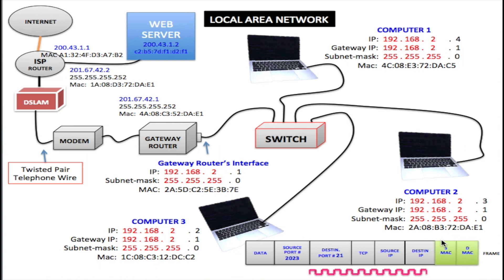So right now we have a packet because we removed the source and destination MAC addresses. We just changed the IP address from the private to the public as the source IP, while the destination IP remains the same. At this point the packet will go to the gateway. At the gateway we will add the source MAC address and the destination MAC address, and then the frame would be sent. One thing I want you to notice is that this is a network as well — we have 201.67.42.1 and .2, and the network part of the IP is the same. In order for these two devices to communicate, they have to be on the same network, just like the local area network was.